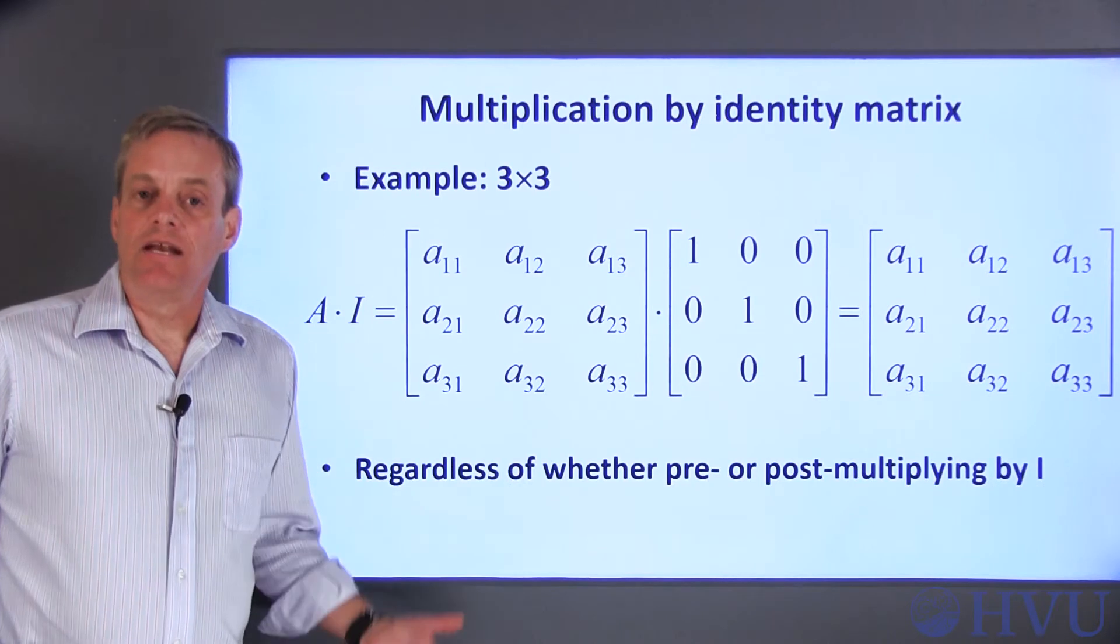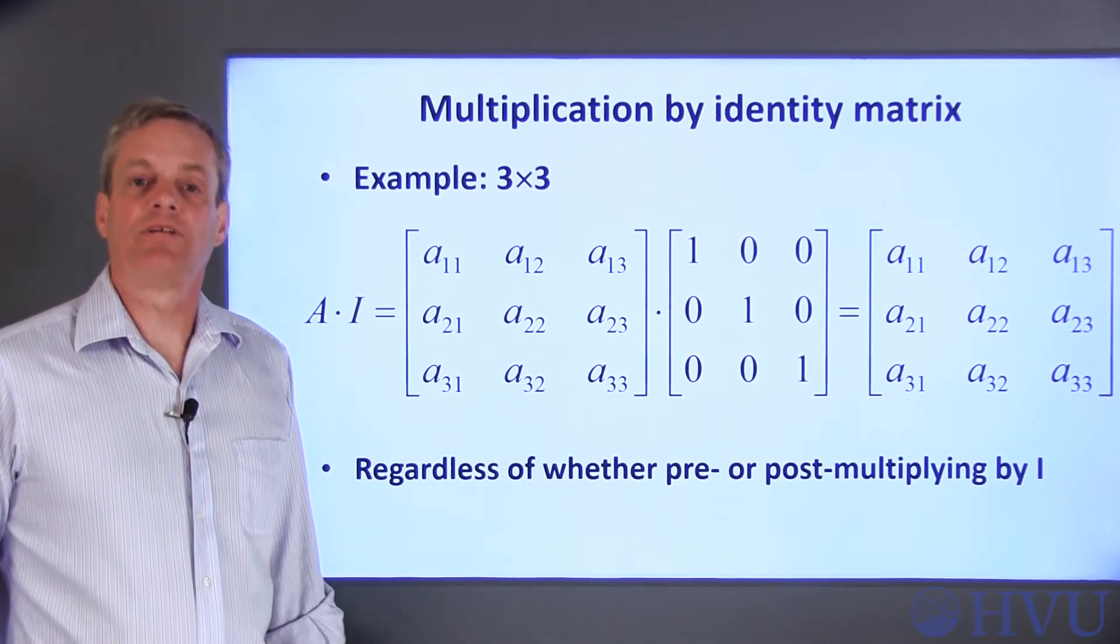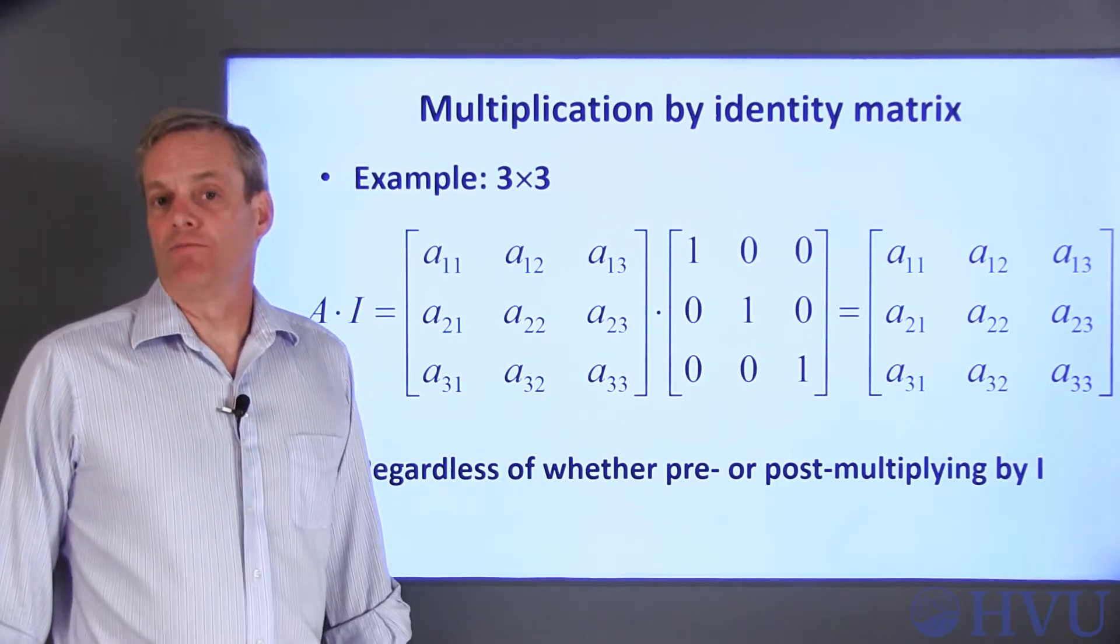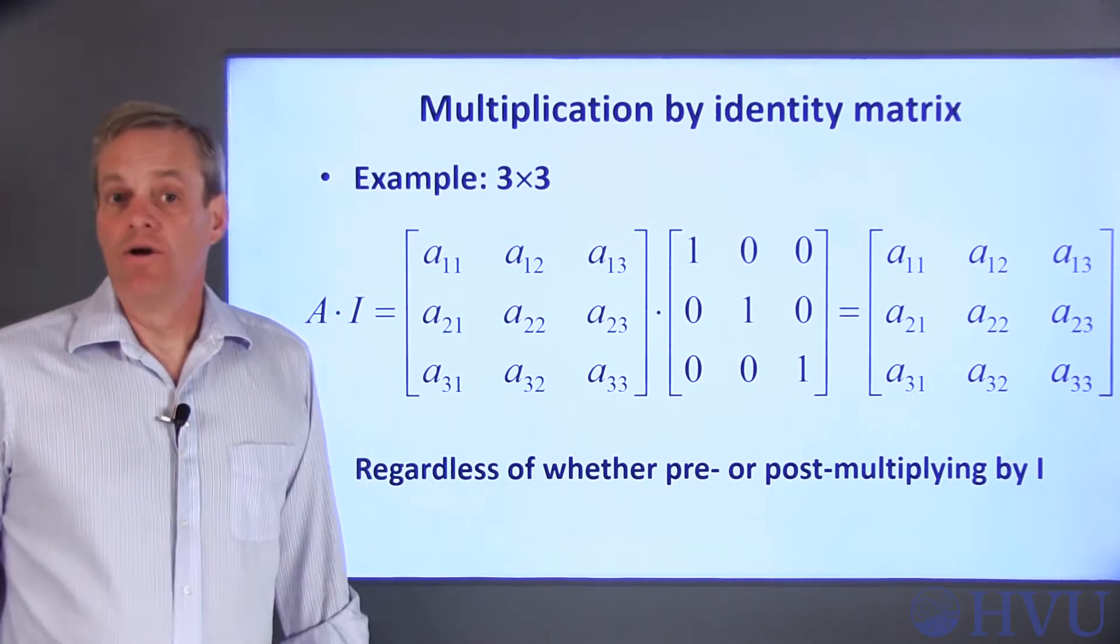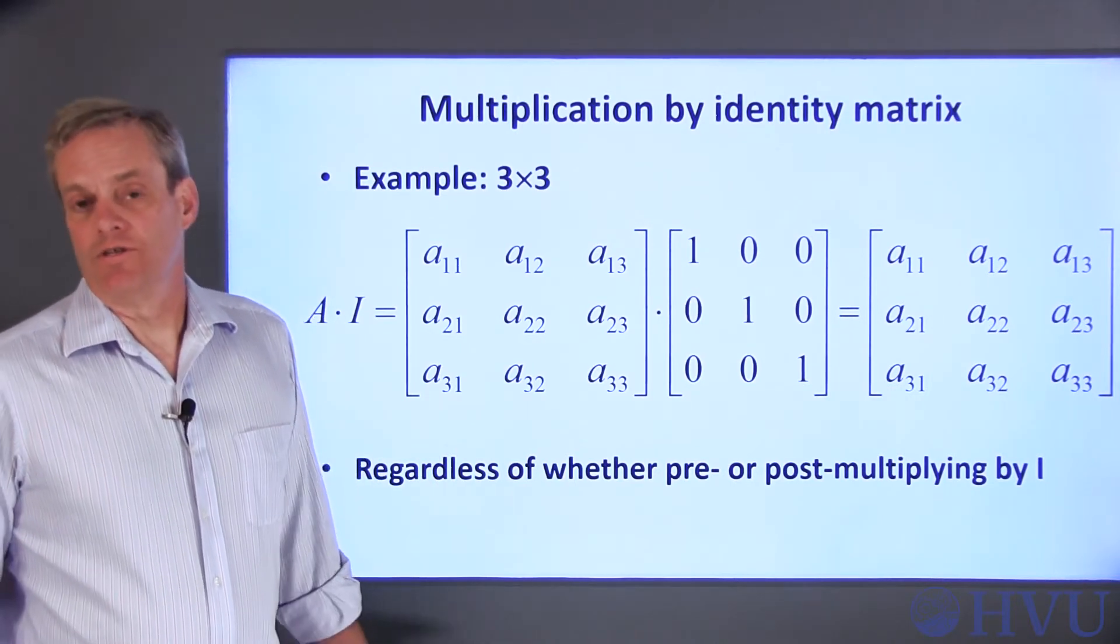As we've seen, matrix multiplication in general is not commutative. Multiplication by an identity matrix is. It doesn't matter whether you multiply I times A or A times I. If A is a square matrix, you'll get your original matrix back.